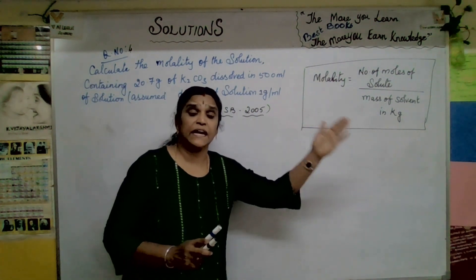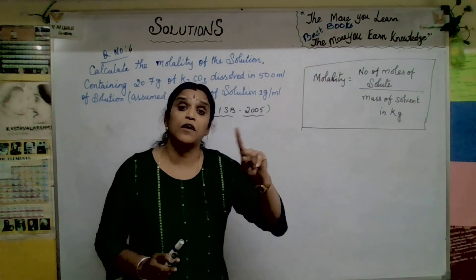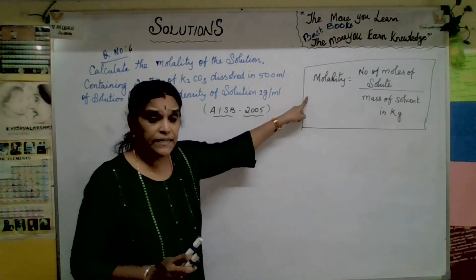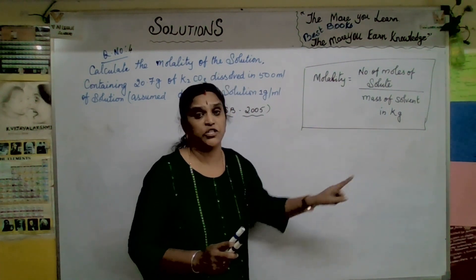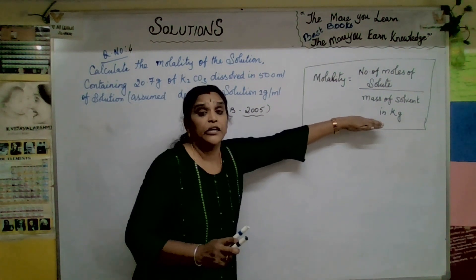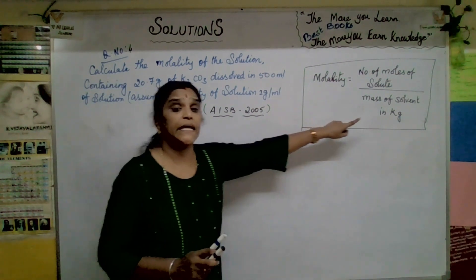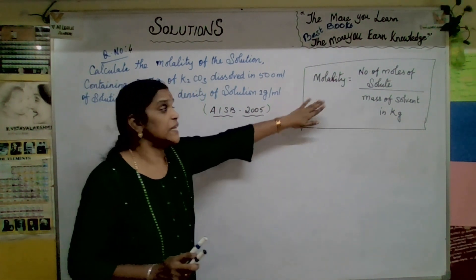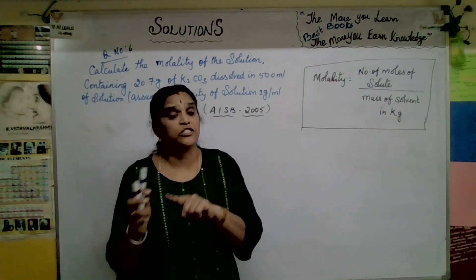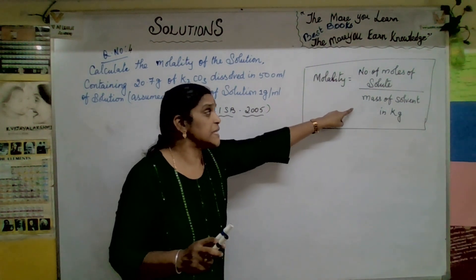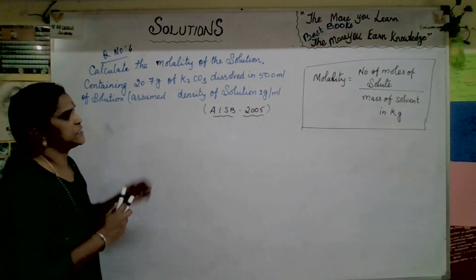What is the difference between molarity and molality? Molarity is number of moles of solute divided by volume of solution in litres, whereas molality is number of moles of solute divided by mass of solvent in kg. In molarity the denominator is the total solution volume; in molality it is only the mass of the solvent.